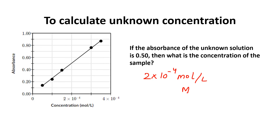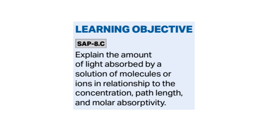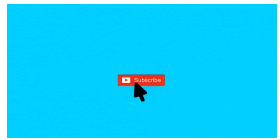The learning objective of this topic was to explain the amount of light absorbed by a solution of molecules or ions in relationship to the concentration, path length, and molar absorptivity. In this video, I explained what absorption spectroscopy is and the Beer-Lambert Law, which explains the relationship of concentration, path length, and molar absorptivity with the amount of light absorbed. Please like and subscribe to the channel and press the bell icon.